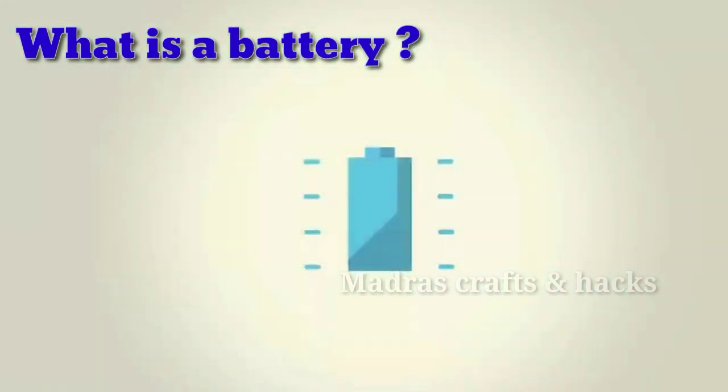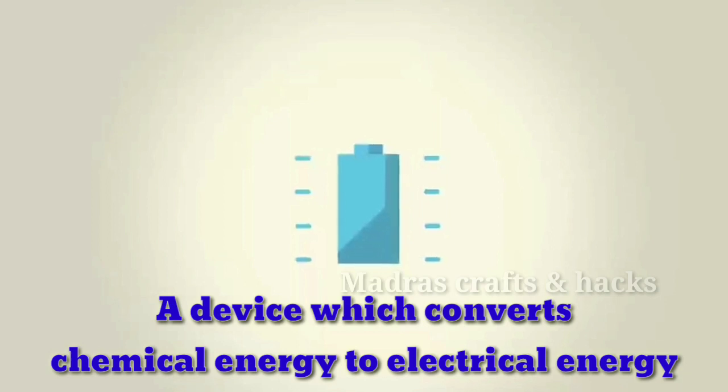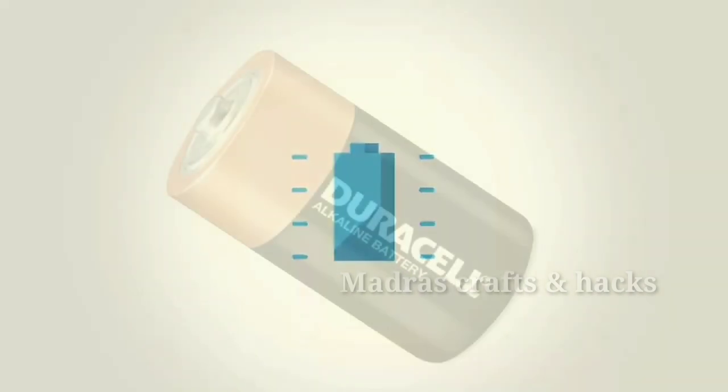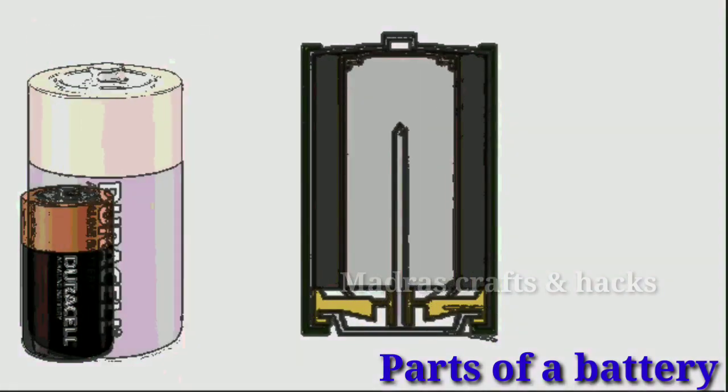What is a battery? A battery is a device that converts chemical energy into electrical energy. In order to produce electricity, a battery must have a cathode, anode, and electrolyte.